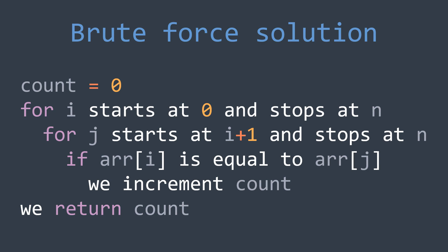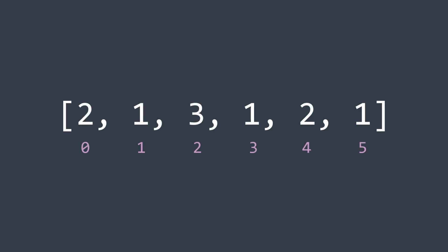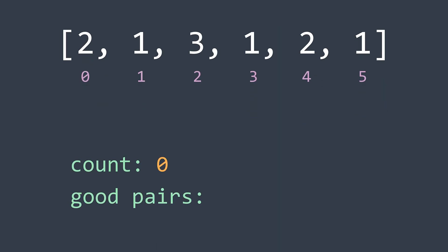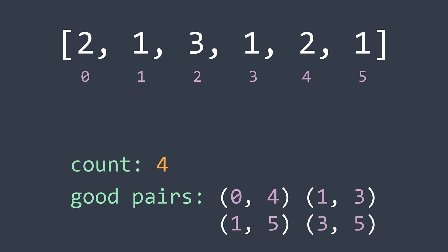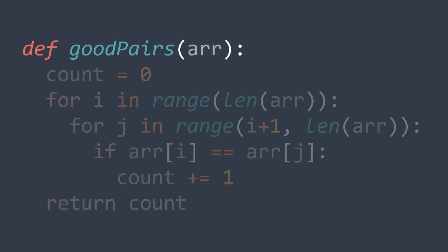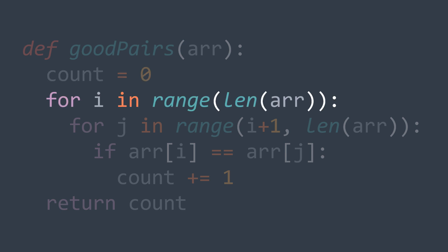For each element, we check the remaining ones, and if we find an element R[j] that is equal to R[i], it means that we found a good pair, so we just increment the counter. With this array, for example, this is what would happen.